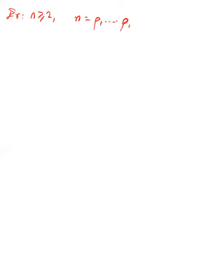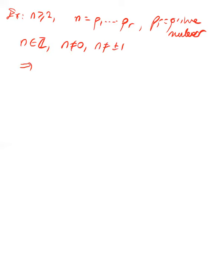We proved that PIDs are UFDs. Next, we will prove that in a UFD, you can write every element as a product of primes. Remember, if n is an integer greater than or equal to 2, you can write n as a product of prime numbers. If n is negative, you may need to add plus or minus one times this product.